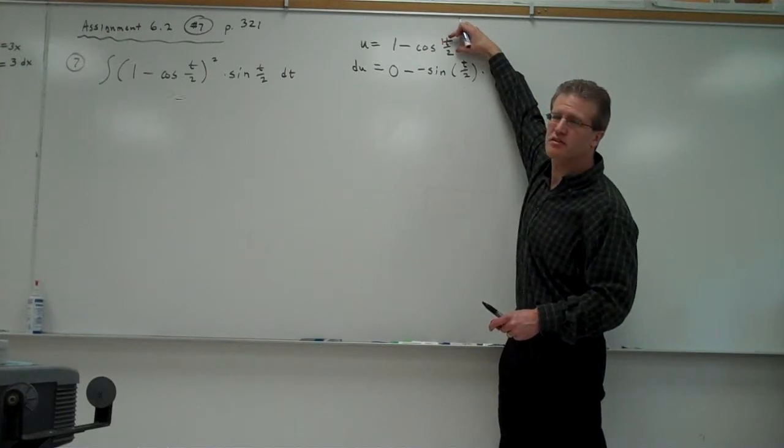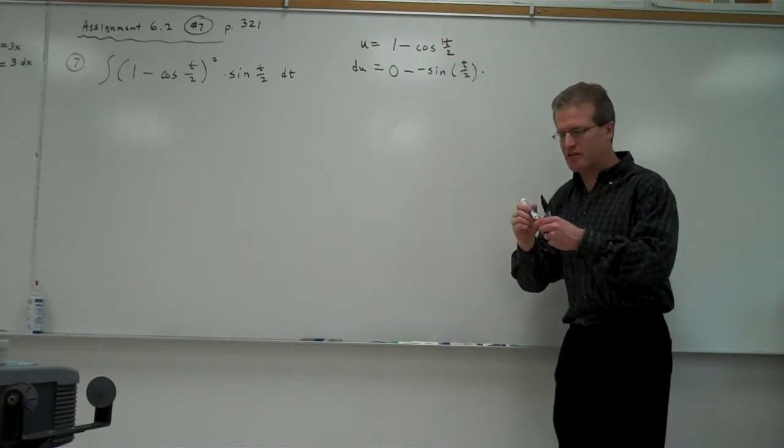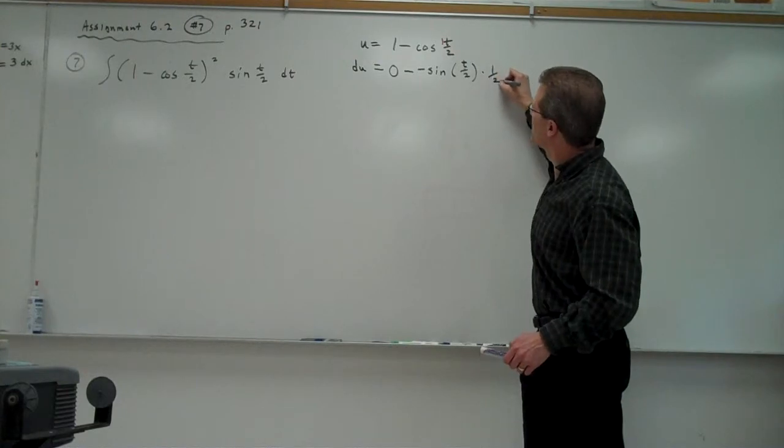Because t over 2 is the same as 1 half t. So what's the derivative of 1 half t? 1 half. Actually, 1 half and then dt. 1 half dt.